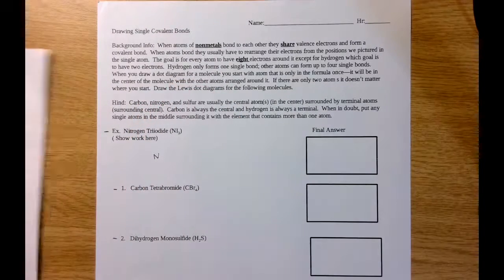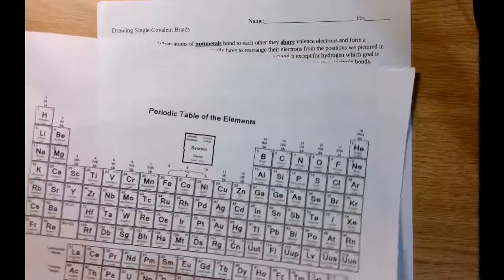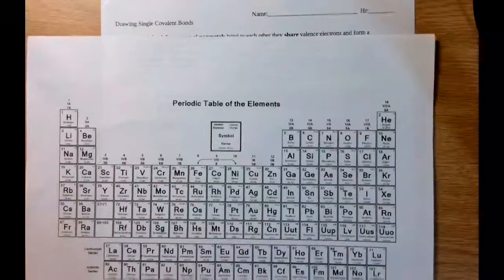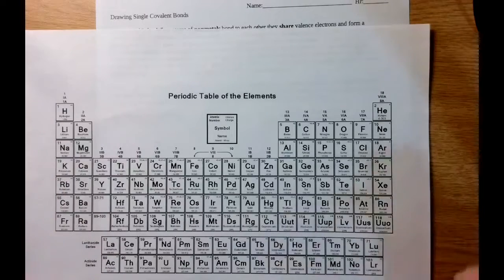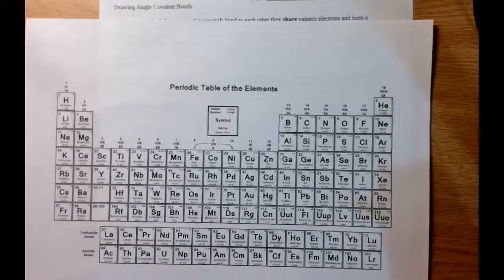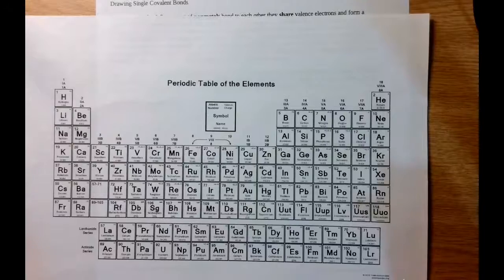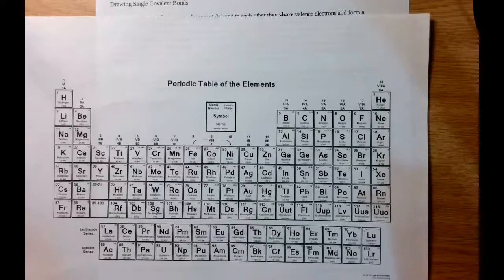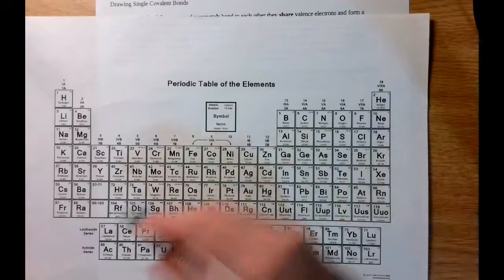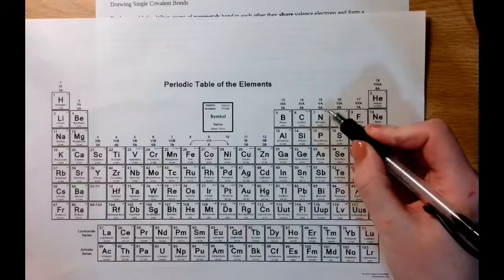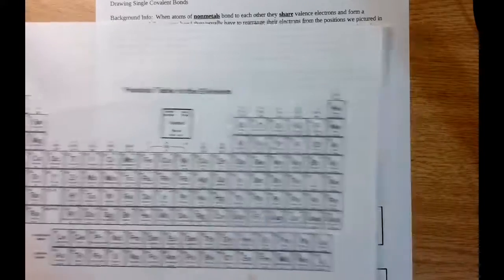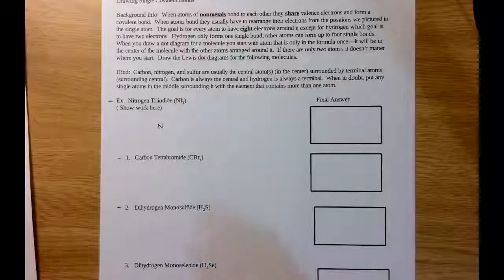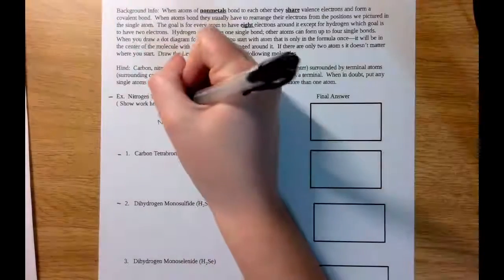We look at our periodic table to figure out how many valence electrons are in a nitrogen atom. To figure out valence electrons, we look at the group number of the element. We see nitrogen is in group 5A, which means it has five valence electrons. So we'll go ahead and fill those in.